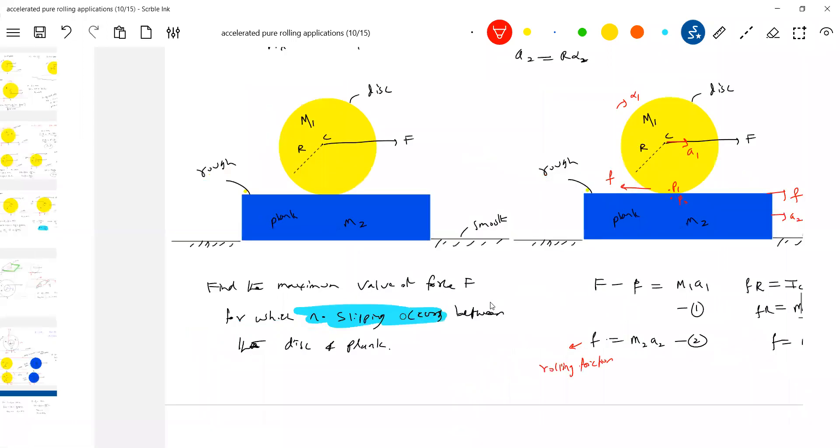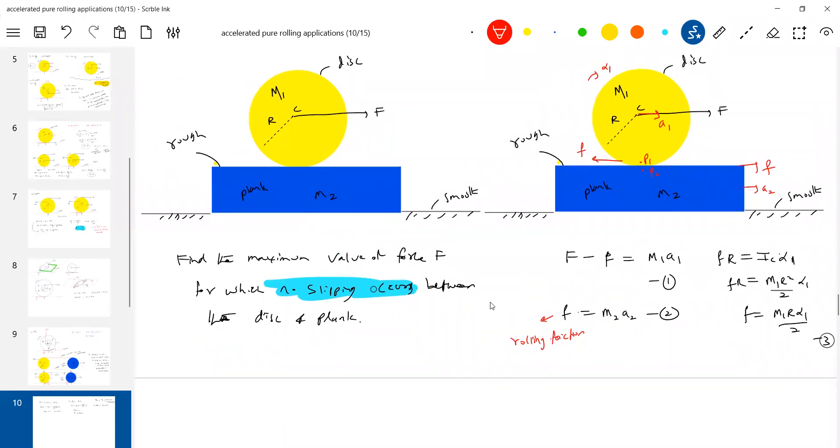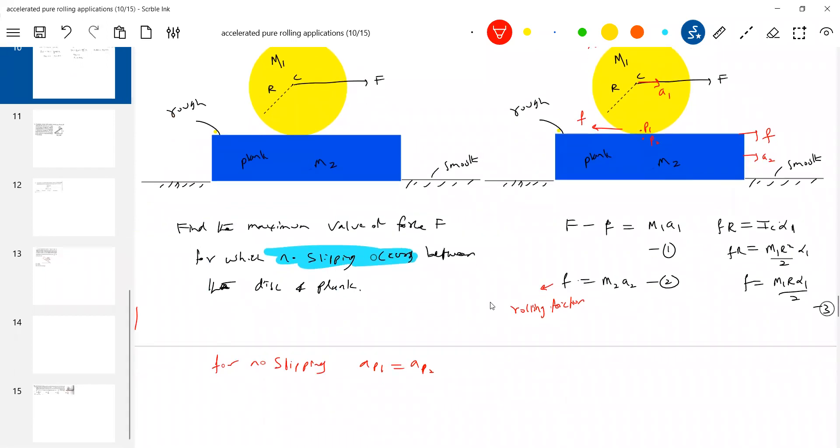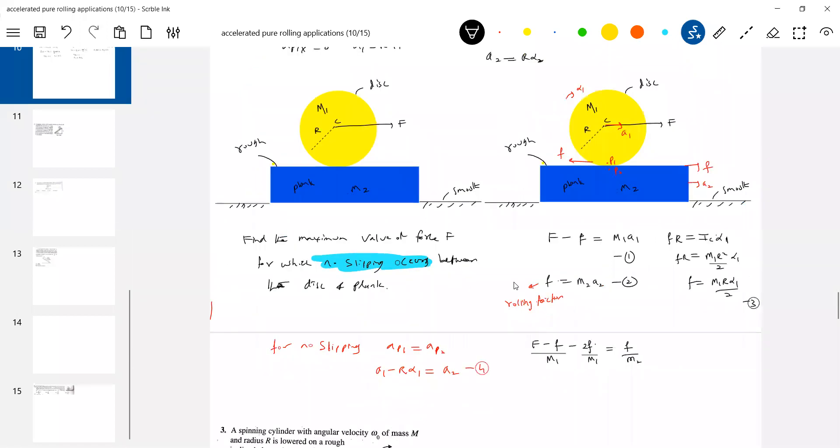Just go back, no slipping idea we introduced in the block open a block. For no slipping what we can write: ap1 equal to ap2. Now what is ap1? ap1 should be equal to a1 minus r alpha 1. What is ap2 should be equal to a2. Substitute all the equations, equation 1, 2, 3 in 4, you can write it as equation 4, you'll get the required answer. So a1 should be equal to F minus small f by m1. What is r alpha 1? 2f by m1. What is a2? f by m2. Solving this we'll get expression for the applied force in terms of friction.